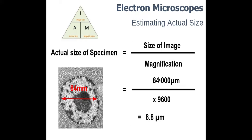84 millimeters is the same as 84,000 micrometers. Now I'd always do my conversion into micrometers or nanometers at this stage because it makes it a little bit easier when processing the results.